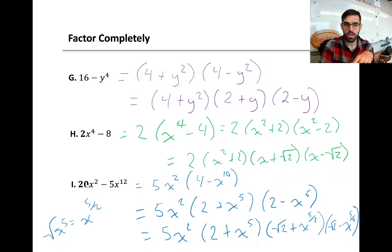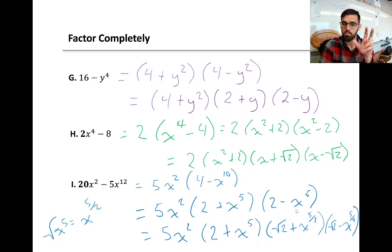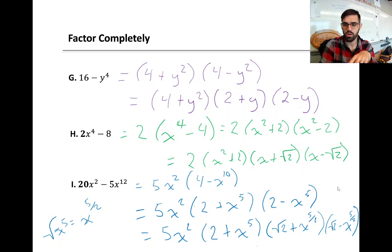Last example: factor out the greatest common factor first. We can factor out 5 and also factor out 2x's, so we pull out 5x squared. Once we do that, we can perform difference of squares on the remaining binomial, getting 2 plus x to the power of 5 times 2 minus x to the power of 5. The last factor technically looks like a difference of squares, but we won't factor it further because that would give us non-whole numbers. So we call this fully factored and leave it.